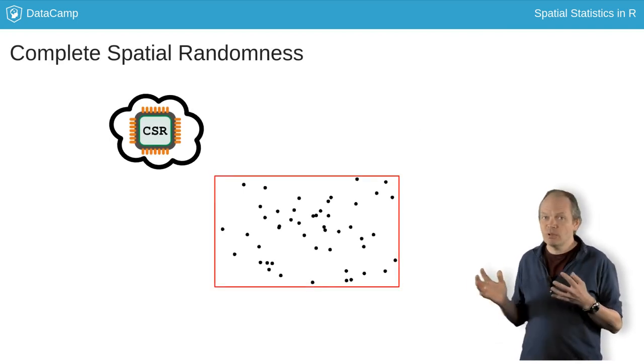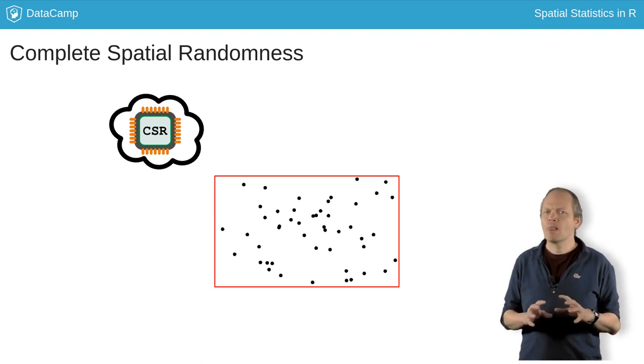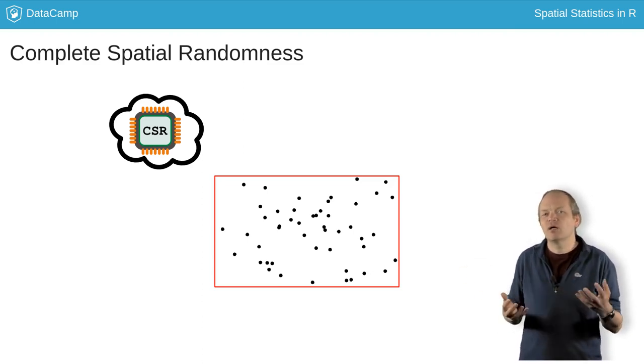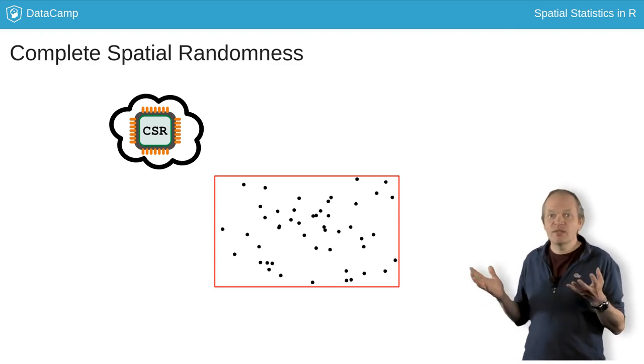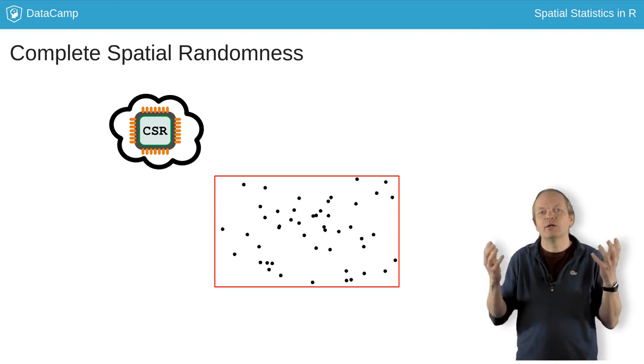The simplest point process model is complete spatial randomness, or CSR for short. It means no part of the window is any more special than any other part, and that the chance of finding an event at any location is the same everywhere. Nothing interesting is happening anywhere.